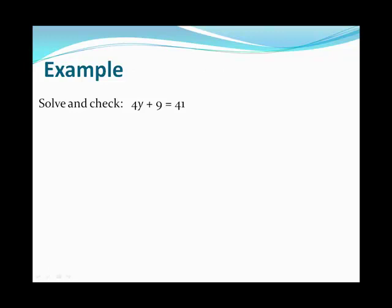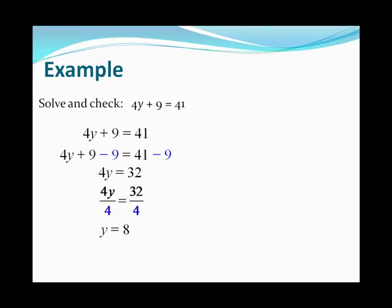For example, we have 4y + 9 = 41. This is a two-step equation with a multiplication and an addition involved with y, our variable. To solve for this, our first step is to get rid of the 9 by subtracting 9 from both sides. When we do that, we have 4y on one side, and 41 - 9 = 32 on the other side. Now our equation becomes a multiplication equation. To solve for that, we divide by 4 on both sides, and we get our solution.